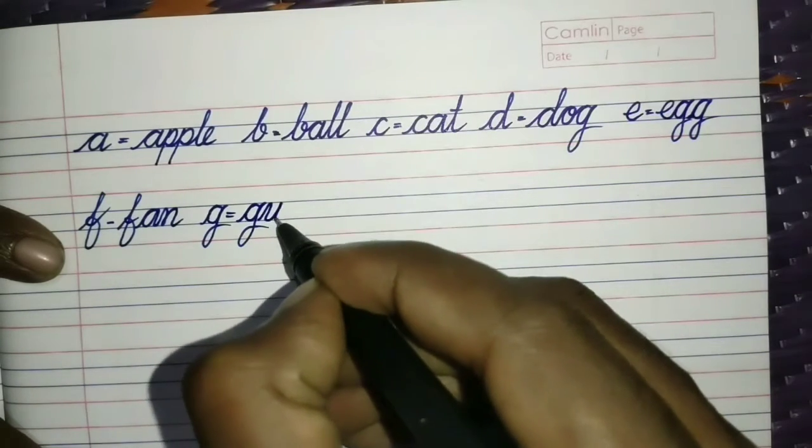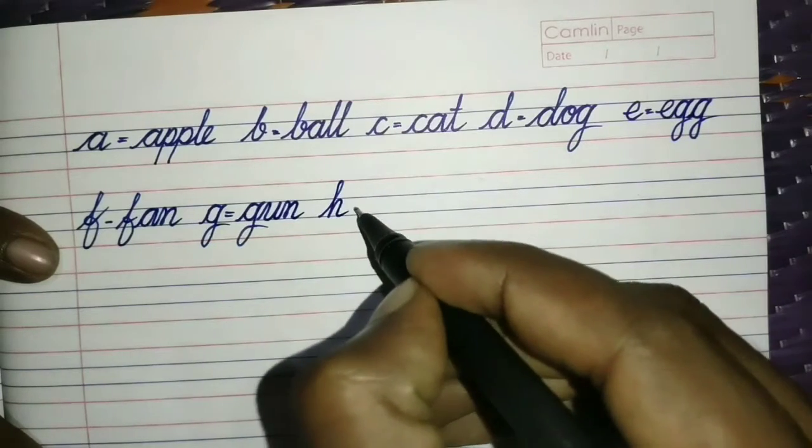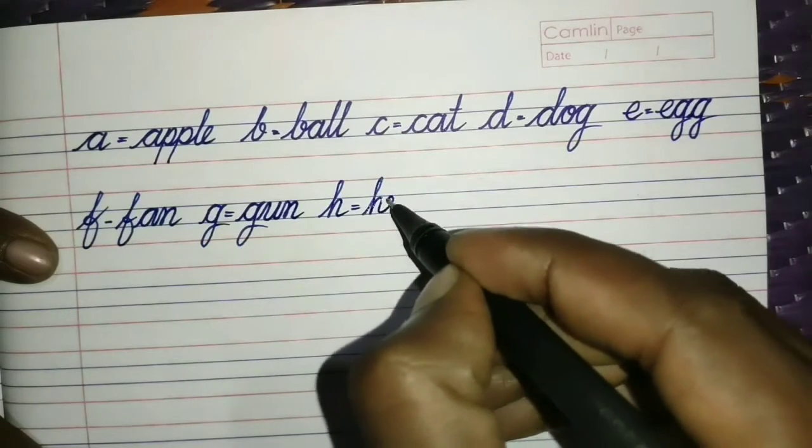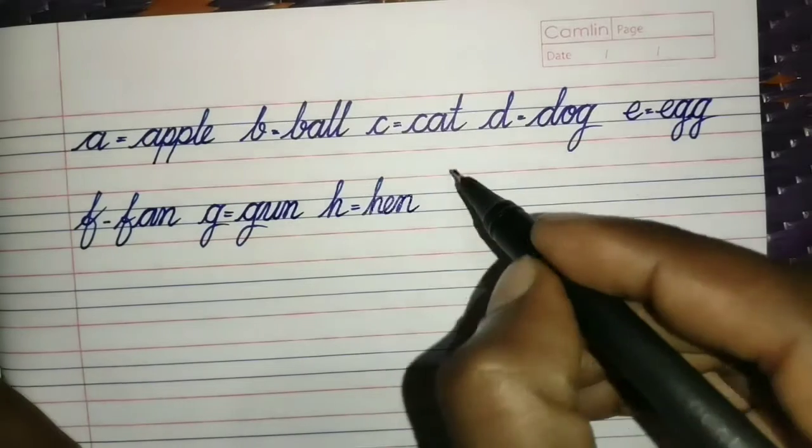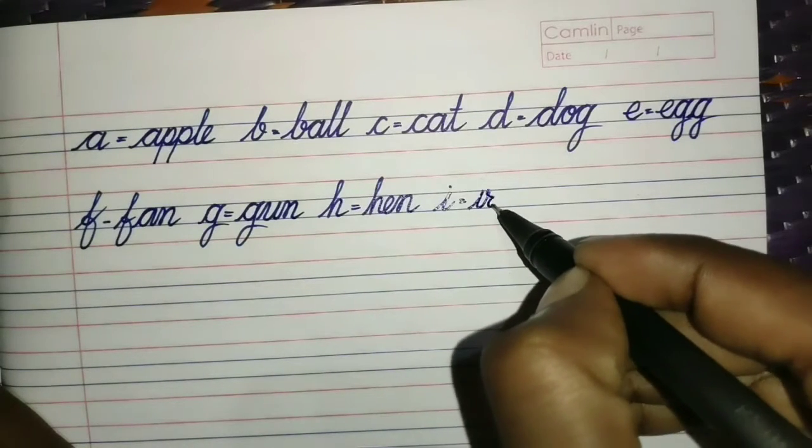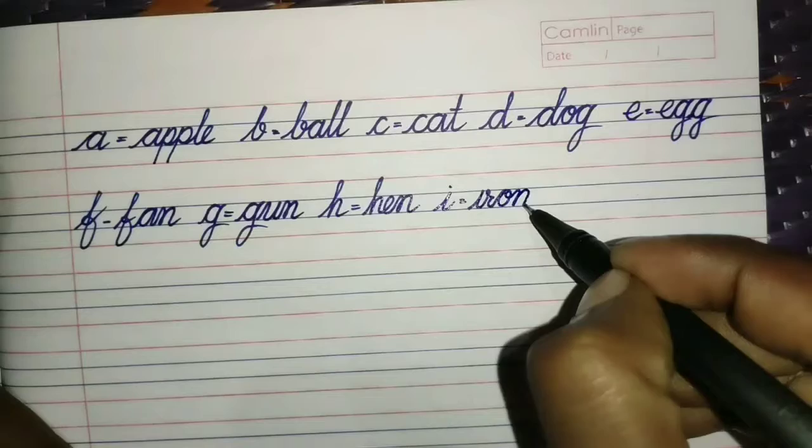G for Gun. G, U, N. Gun. H for Hand. H, A, N, D. Hand. I for Iron. I, R, O, N. Iron.